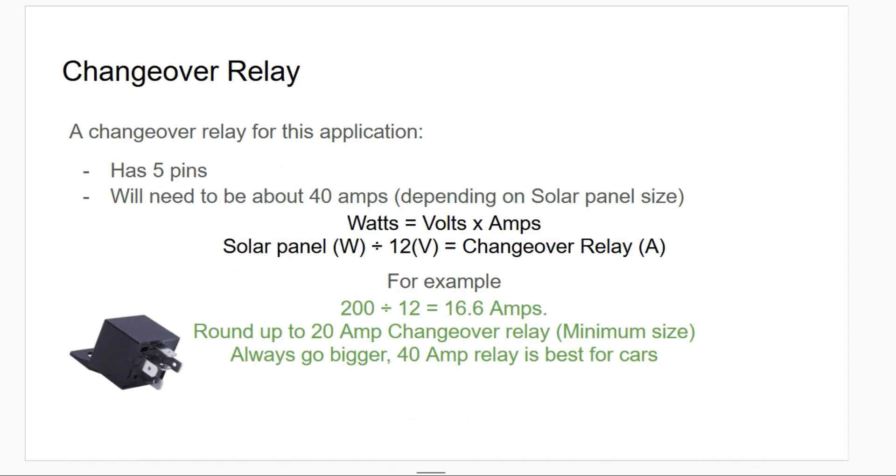The changeover relay is simply a five pin relay. For most cars, 40 amps will be sufficient. So just an example, watts equals volts times amps. So your solar panel size divided by 12 will be the changeover relay size that is required. For example, a 200 watt panel, which is pretty common, divided by 12 volts equals 16.6 amps.